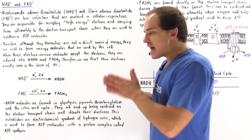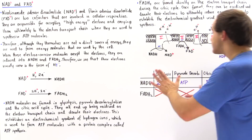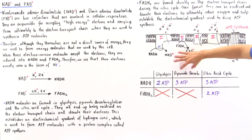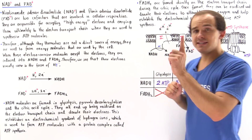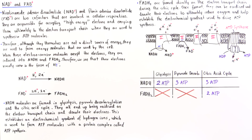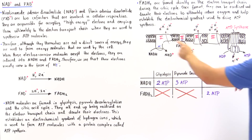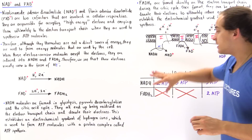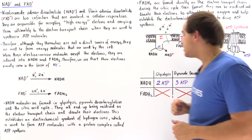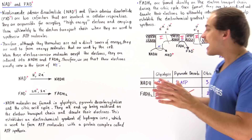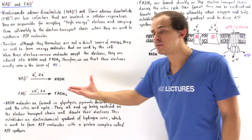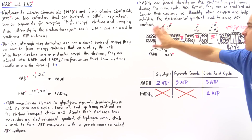For NADH molecules formed inside the mitochondrial matrix — including those from pyruvate decarboxylation and the citric acid cycle — for every one NADH molecule, three ATP molecules are formed. For one NADH formed in glycolysis in the cytoplasm, a net of two ATP molecules are produced, because one ATP must be used to transport that NADH from the cytoplasm into the mitochondrial matrix where the electron transport chain is found.